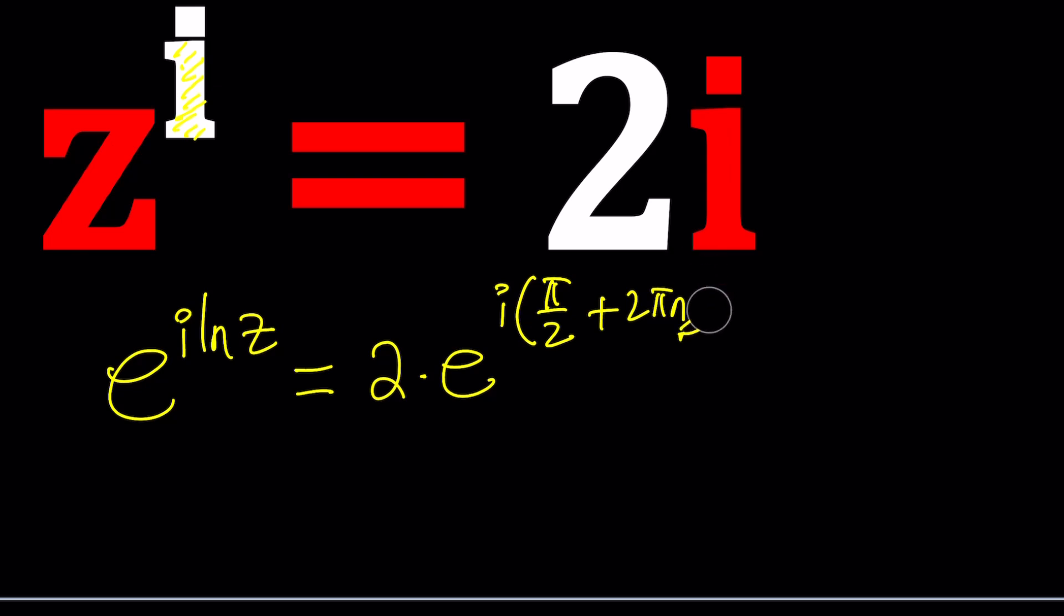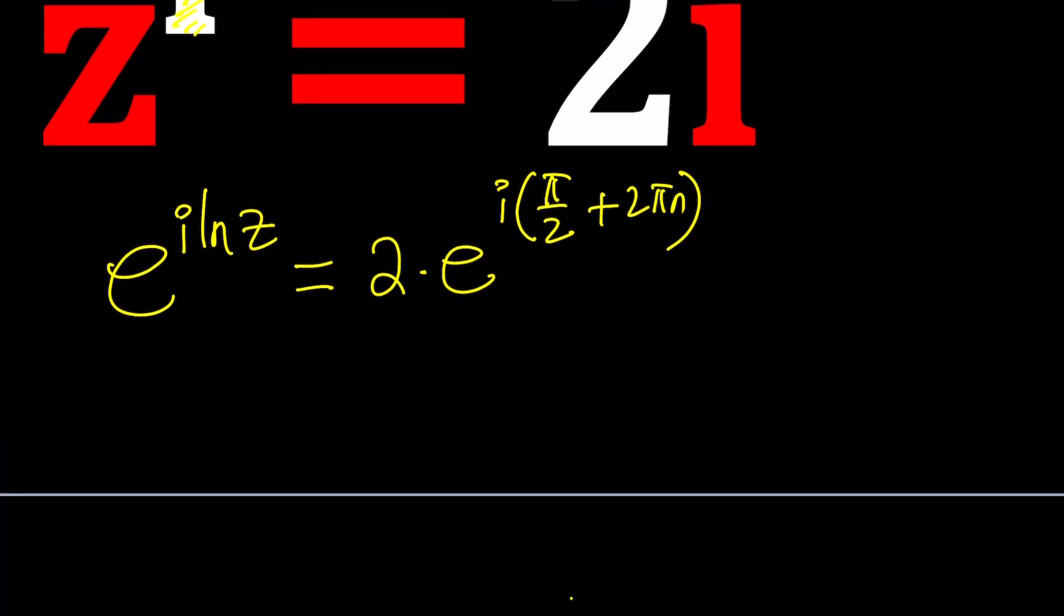When you have N on the right-hand side, N is an integer, obviously, this means there's going to be infinitely many solutions, and we're not just considering the principal value. If you want the principal value, N equals 0 will get you there.